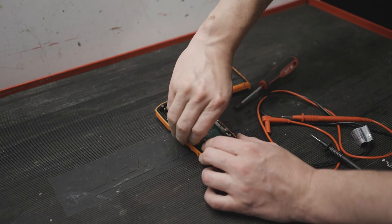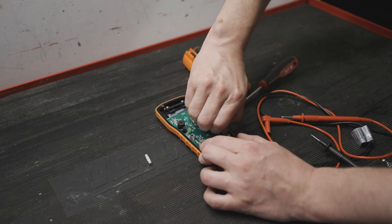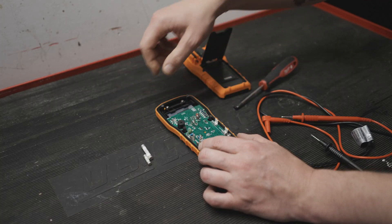My multimeter has one large and one small fuse, again this may look different in yours. For the sake of this video I'm pulling and checking both.